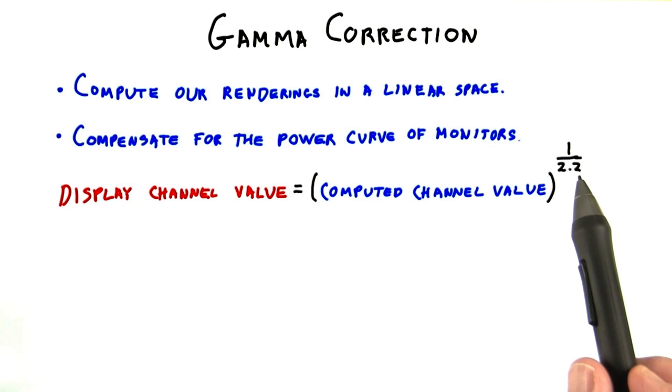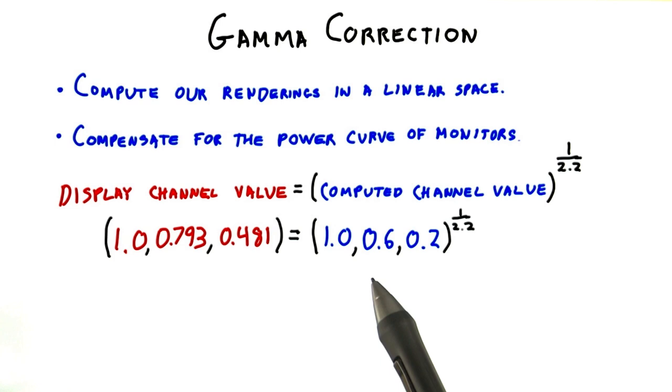Older Mac displays used 1.8 or so, but now 2.2 is the norm for all monitors. For example, say we have a value of 1.0, 0.6, 0.2 in our linear compute space.